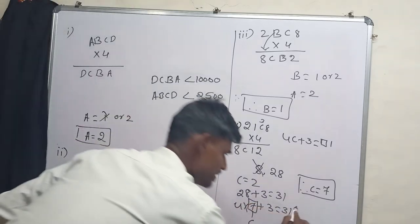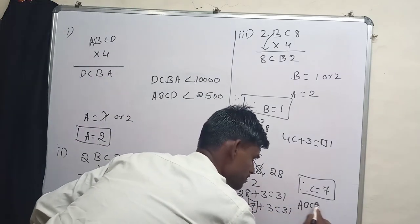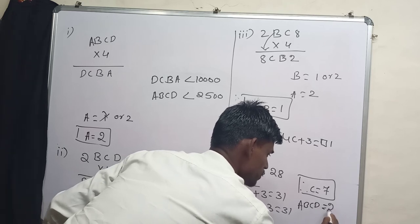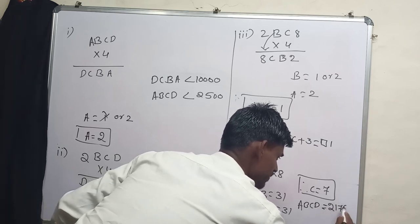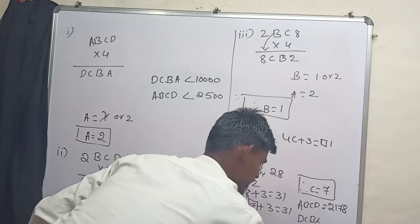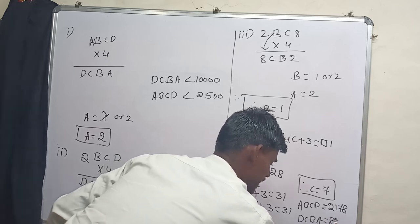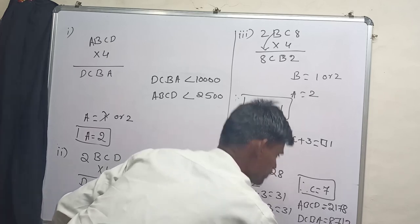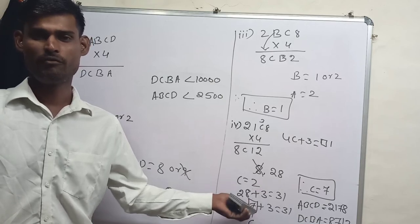So the number ABCD is equals 2178. Then the value DCBA is equals 8712. Thank you for watching the video.